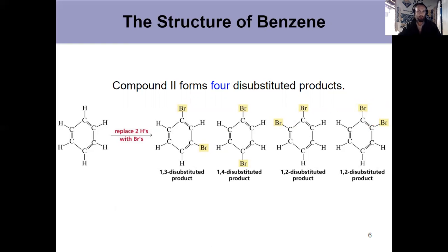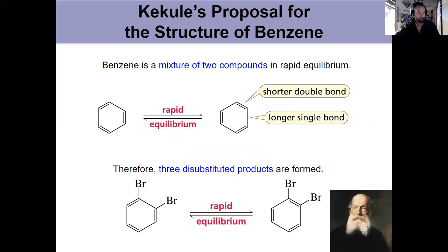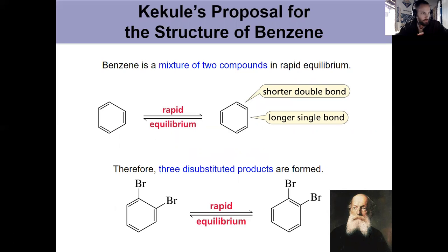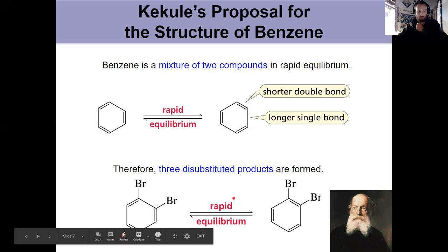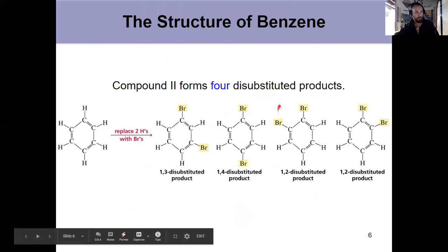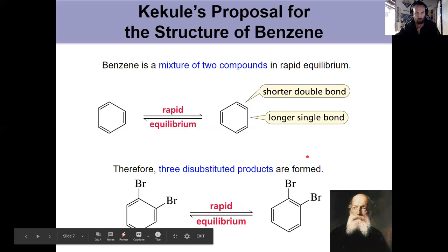And the structure for benzene was first dreamed up by this guy, Friedrich Kekule. And what he said was that benzene might be an idea or a compound that's a mixture of two things in rapid equilibrium. And those alternating single and double bonds, I would notice the position of the single and double bonds alternates here. Rapid equilibrium between these two. If that's the case, then we would just form three disubstituted products, because that last one would be in rapid equilibrium so much so that we couldn't distinguish it. So now, jumping back a slide, these two become one and we get three products overall.